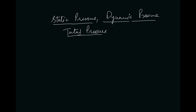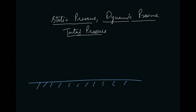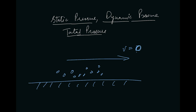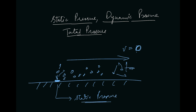Static pressure: let us say there is any surface and there is a fluid element lying here. Now this fluid is not moving with any particular velocity, so v is 0. Since this fluid element is not flowing, it is moving randomly here and there. The pressure which this fluid element is putting on this surface — because it is moving randomly — is known as static pressure.